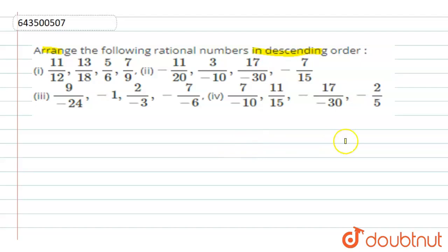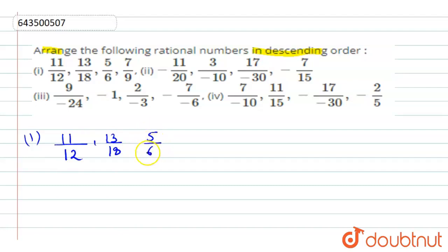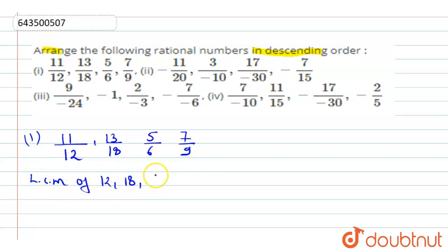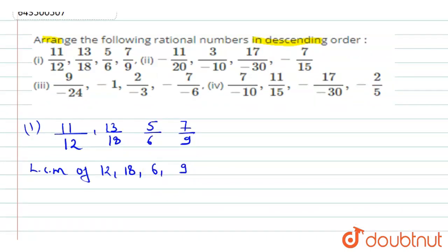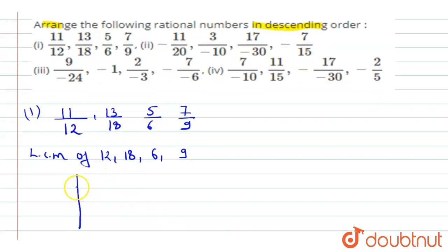We will take the first question and solve it, then move to the next in the same way. The first one is 11/12, 13/18, 5/6, and 7/9. The first thing we need to do is take the LCM of 12, 18, 6, and 9.